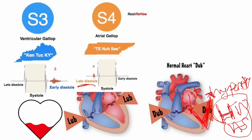S4 can also be caused by something restricting the heart — like restrictive cardiomyopathy due to an extra substance such as amyloid. Anything causing a stiff left ventricle will make the flow turbulent during the atrial kick in late diastole. We usually hear S4 as 'Tennessee, Tennessee, Tennessee.'